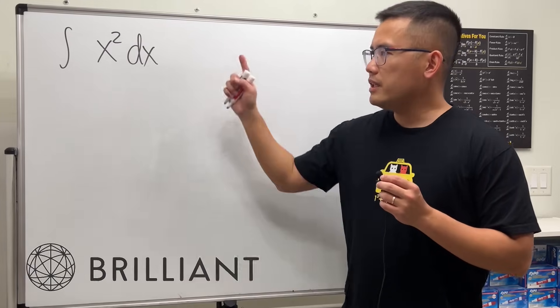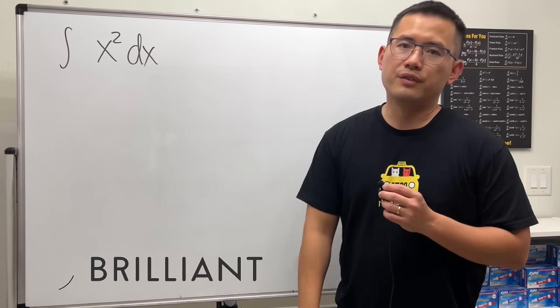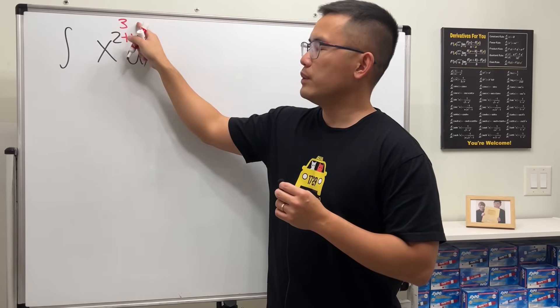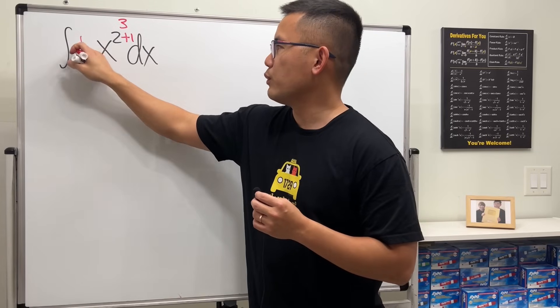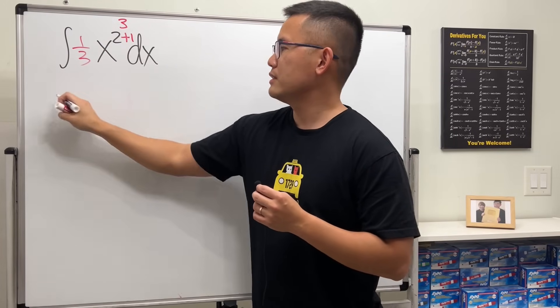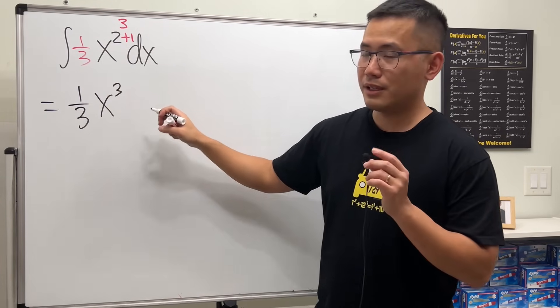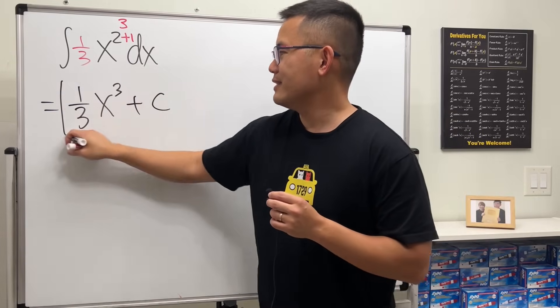Day one. If you can integrate this today, then you will be good for the day. Let's go ahead and add one to here, and then we get three. Divide it by the new power, so we have one third. The answer is one third x to the third power, and then don't forget the plus C. That's it.